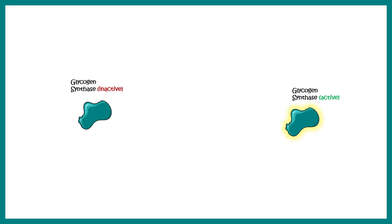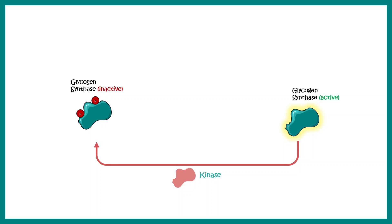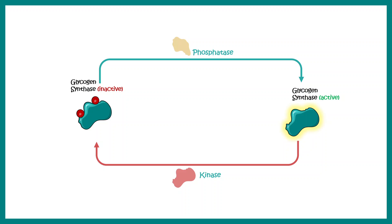The key enzyme that regulates glycogenesis is glycogen synthase, which has two conformations: inactive and active. In the inactive conformation it is heavily phosphorylated at the C-terminal region. Certain kinase residues trigger this phosphorylation, while phosphatase residues trigger dephosphorylation, thereby activating or inactivating the enzyme. It's like a toggle switch allowing the enzyme to be activated or inactivated in a context-dependent fashion.